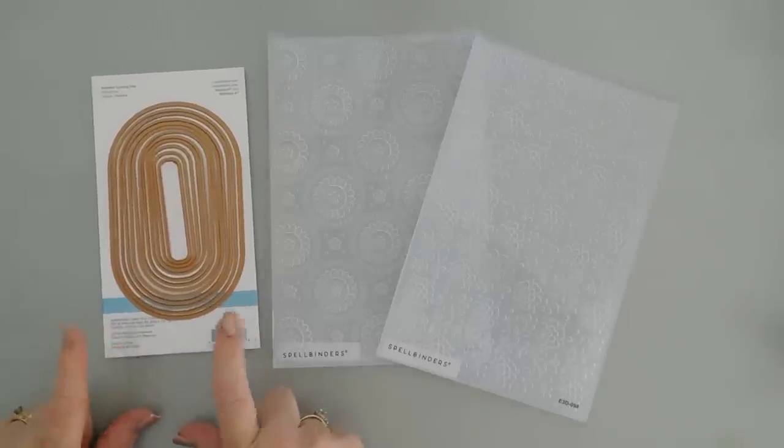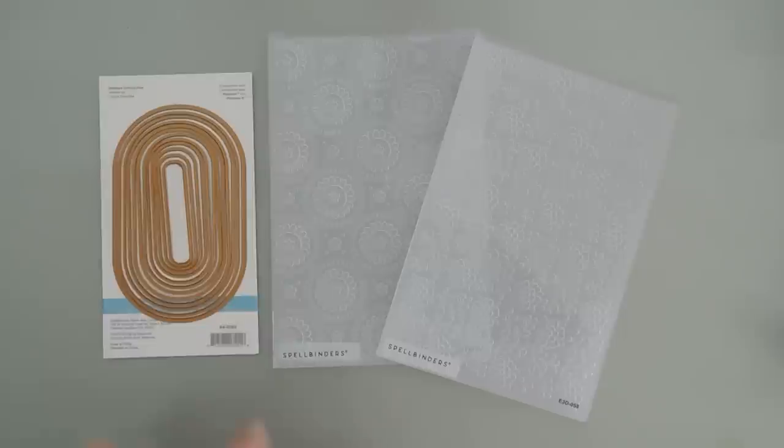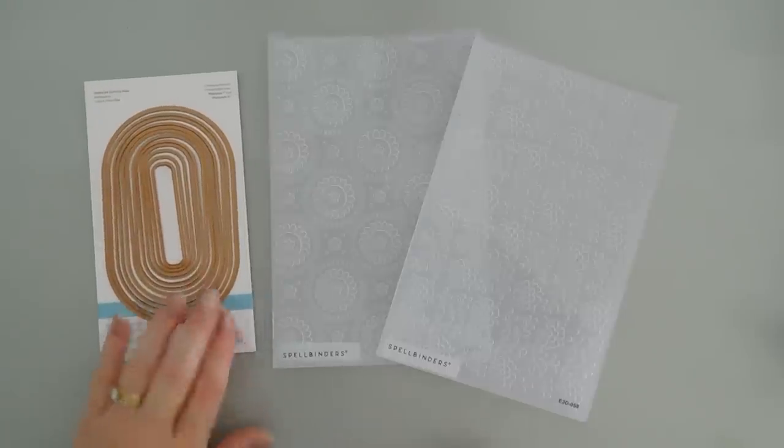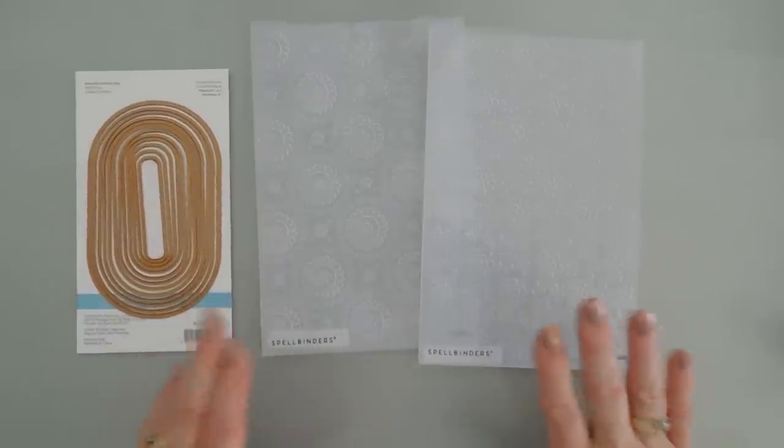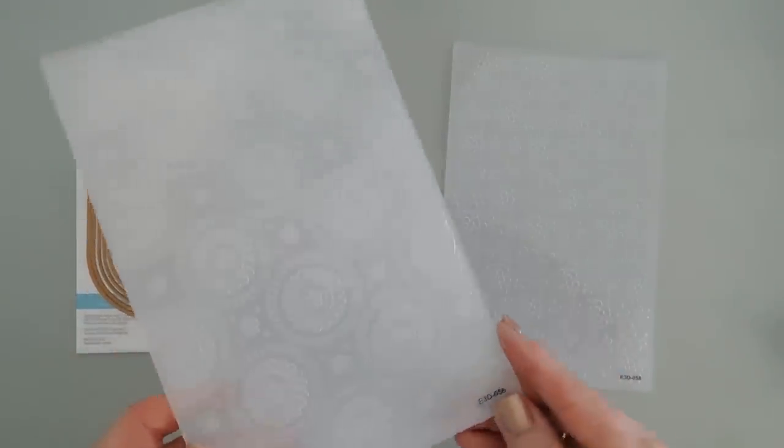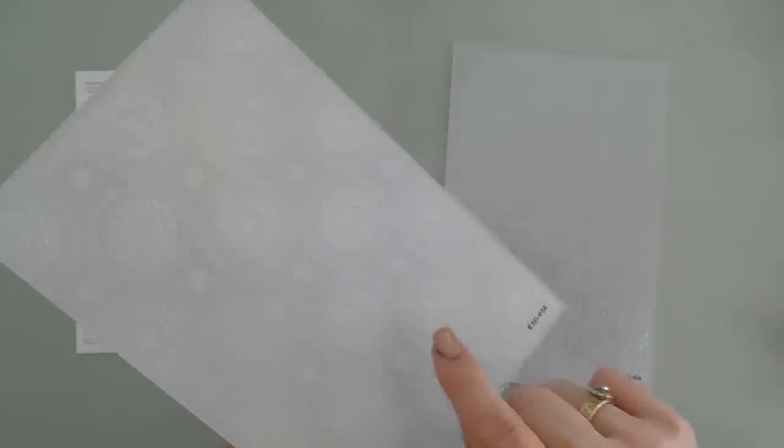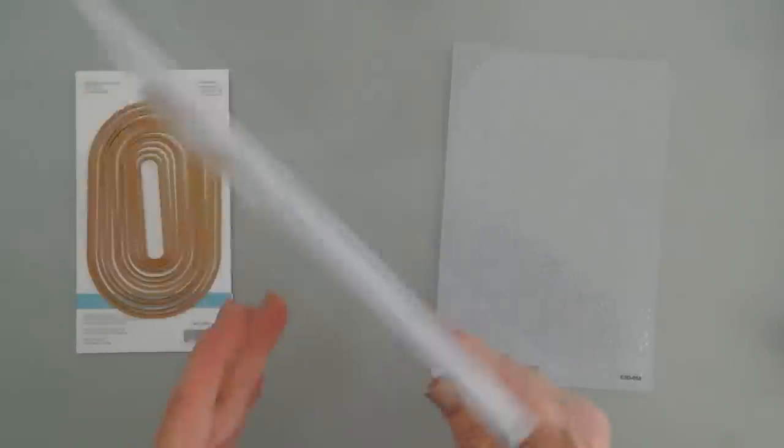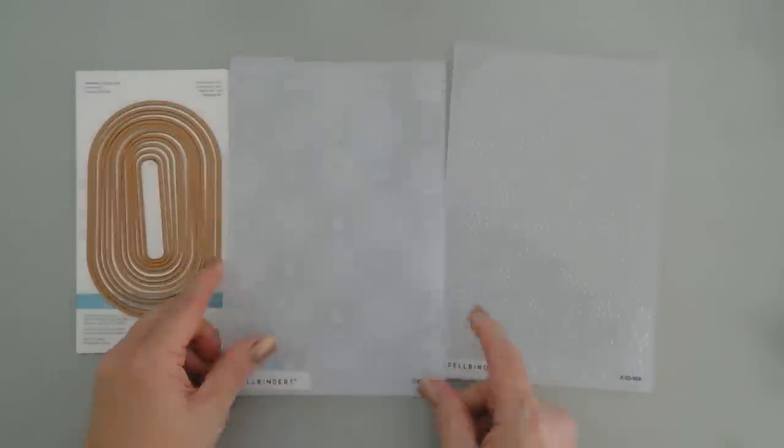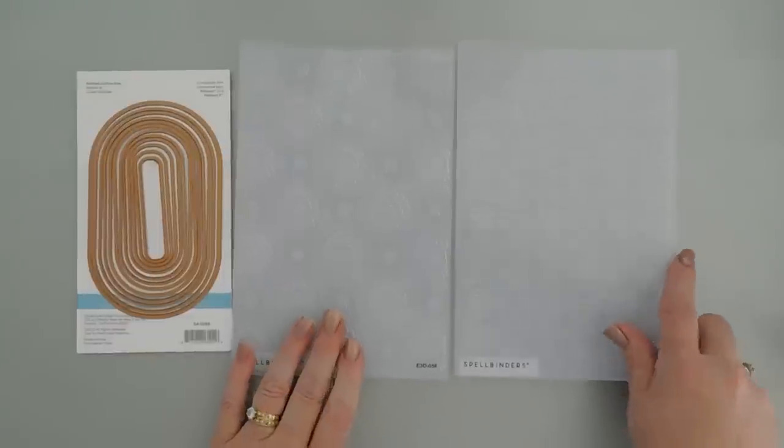The die set is the Spellbinders Essential Modern Ovals 12-piece nesting set. And then there's some 3D embossing folders that are so pretty. This is probably one of my favorites. This has some beautiful circles and inside the circle is a flower. This is the Mandala Blooms. And then this one has some beautiful florals. It's called the Floral and Vine 3D embossing folder.